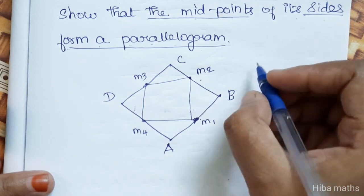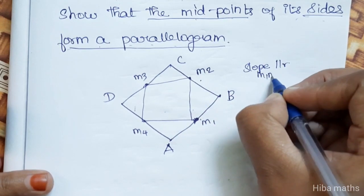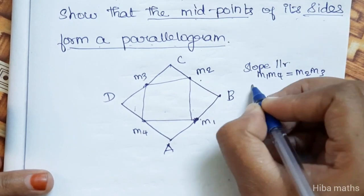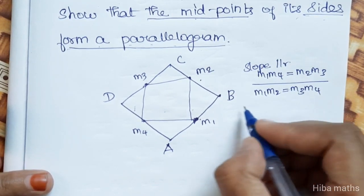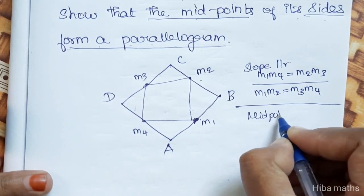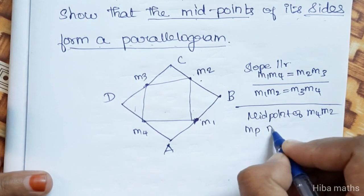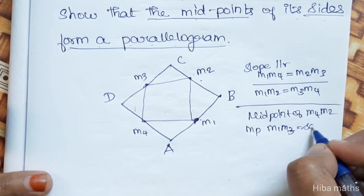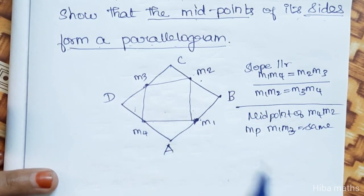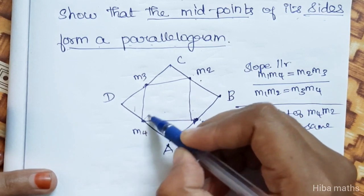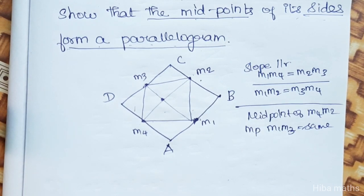A parallelogram has equal slopes on opposite sides, meaning opposite sides are parallel. So slope of M1-M4 should equal slope of M2-M3 — this is the first condition. And slope of M1-M2 should equal slope of M3-M4. Alternatively, if the midpoints of the diagonals are equal — the midpoint of M1-M3 equals the midpoint of M2-M4 — it is a parallelogram.